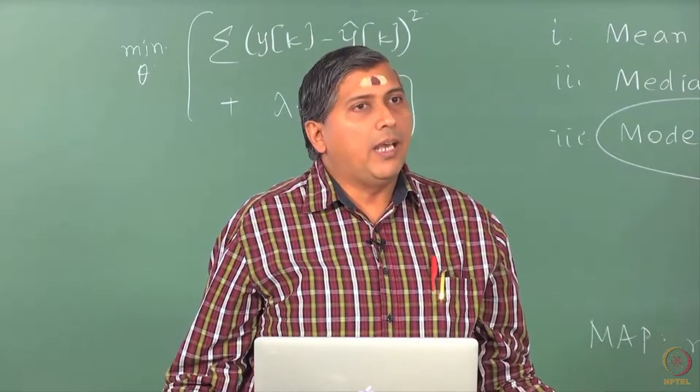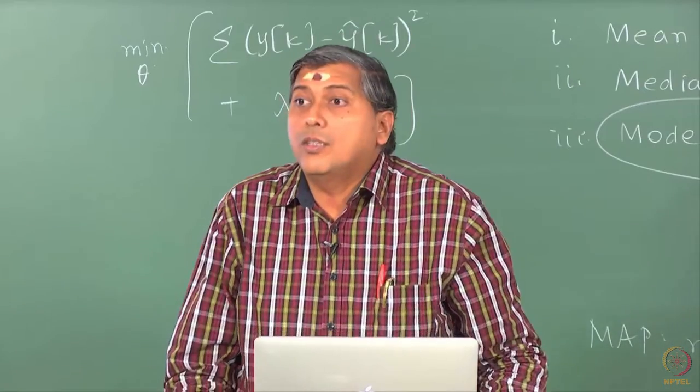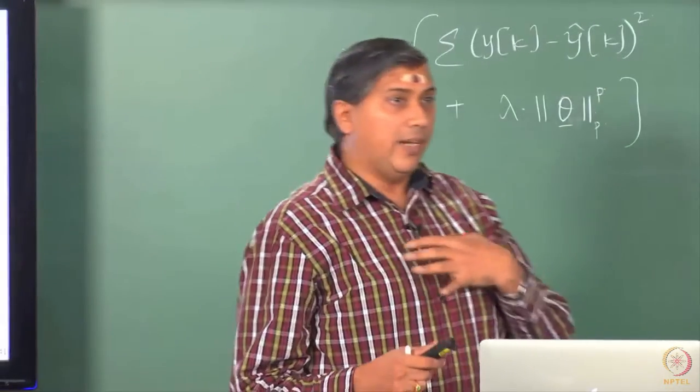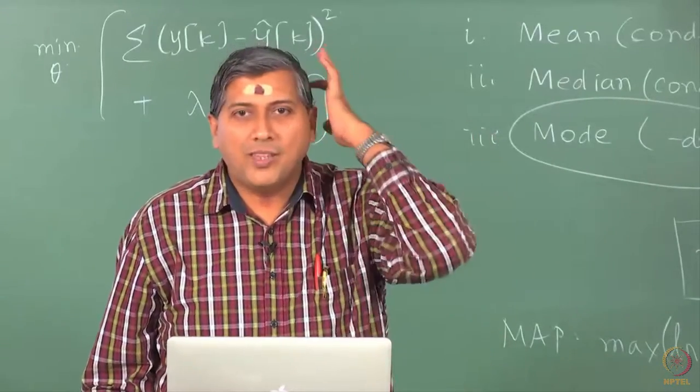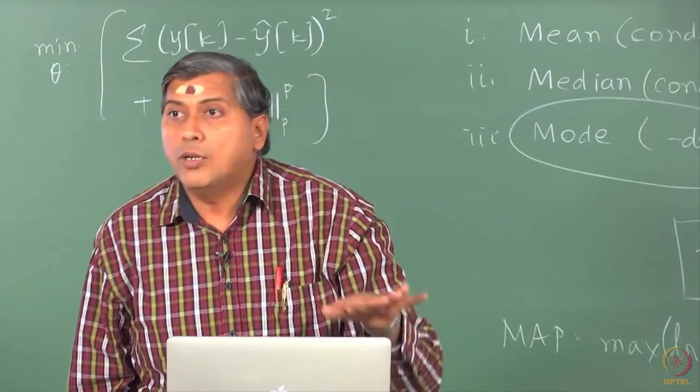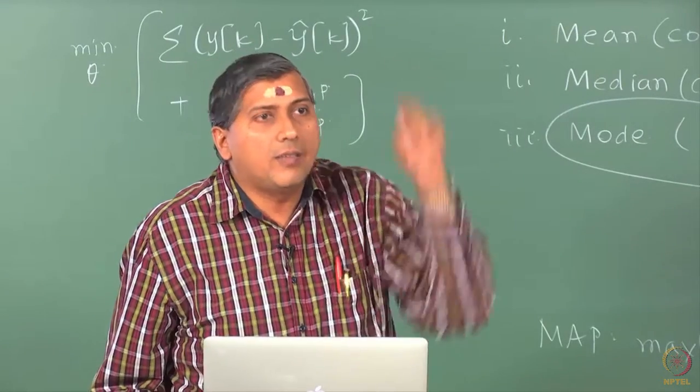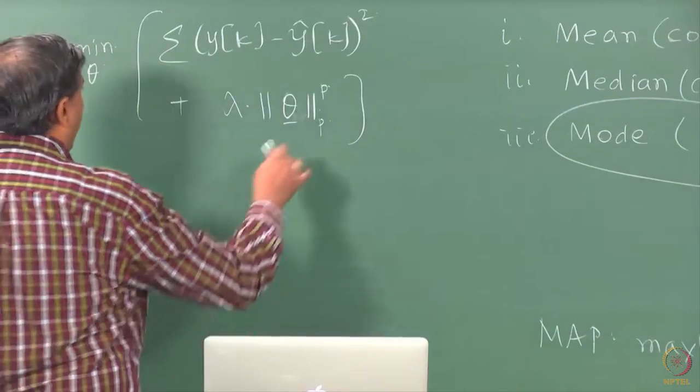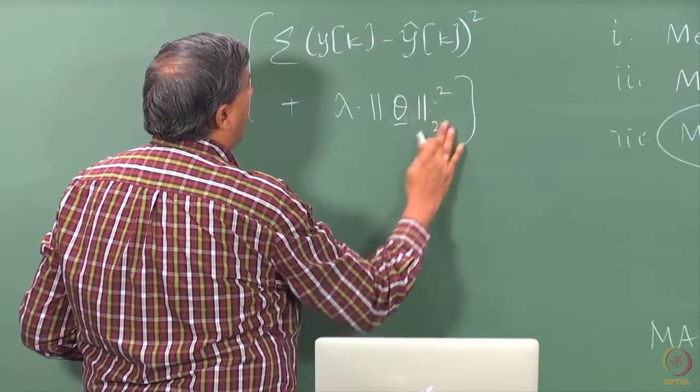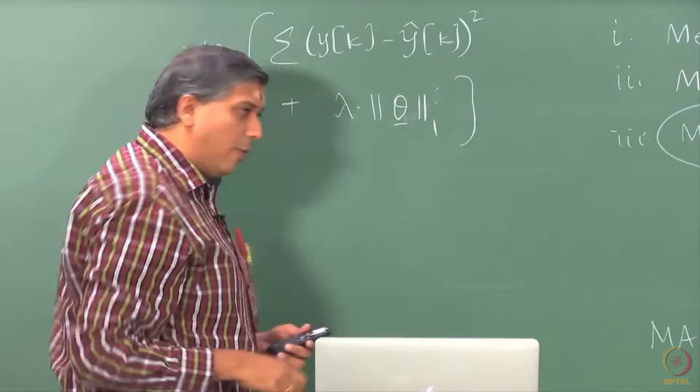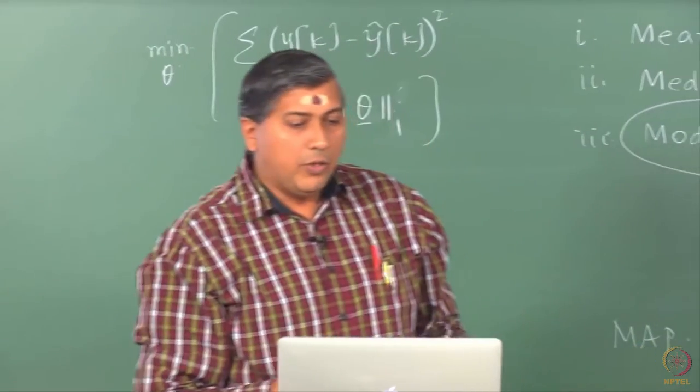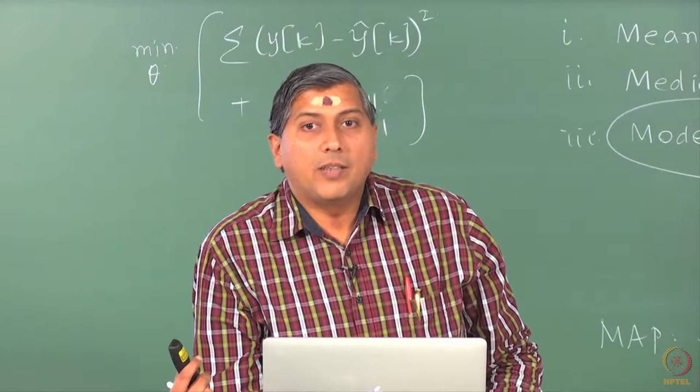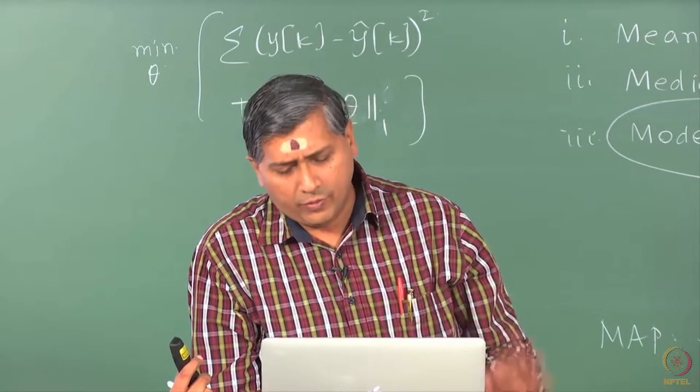But then gradually, people realized that this is still not doing the job because just because you are minimizing the square 2 norm, it does not mean that the unnecessary thetas will be driven to 0. They will be low value. All of them will be awake. You do not want them to be active. Whichever thetas are unnecessary, they should be 0 value. So, then came in mid-90s the 1 norm minimization, 1 norm regularization, which was due to Tibshirani, who is at Stanford. And he called this optimizer as lasso, least absolute shrinkage selection operator. That is the name for it.